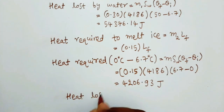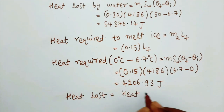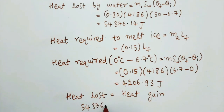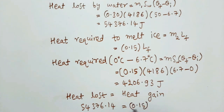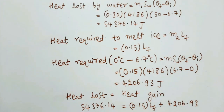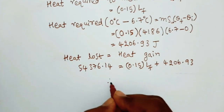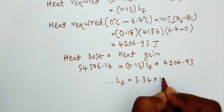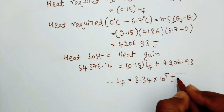By the principle of calorimetry, heat lost equals heat gained. So 54,376.14 joules equals 0.15 times LF plus 4,206.93 joules. From this we can get LF is equal to 3.34 times 10 to the power 5 joules per kg.